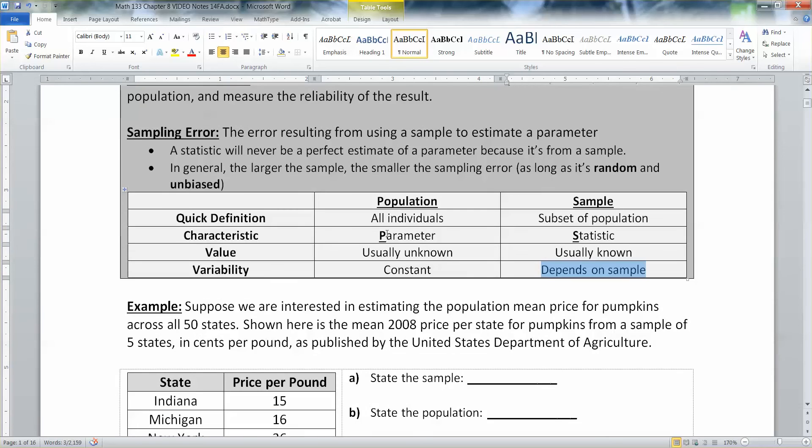And then you assume that this parameter value is close to the statistic value, as long as you took a nice random unbiased sample.